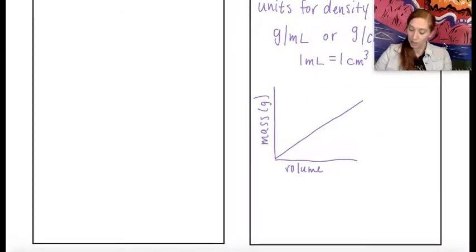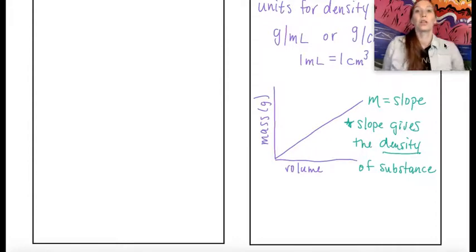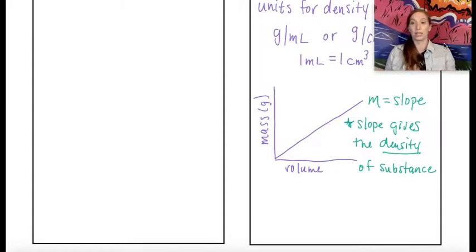So I'm going to change colors here and equal slope. And then we're going to make a note here the slope gives the density of the substance. So you should be able to either be given data to plot graphically, like we did in the lab and find the slope to get the density, or maybe you're given a graph like you were on some of the problem sets and you have to find the density from there, or you can interpret those graphs.